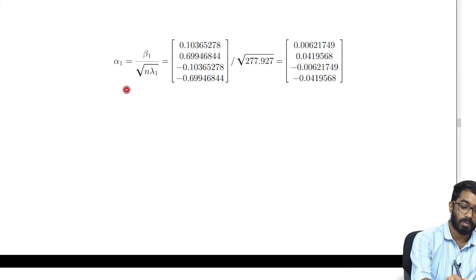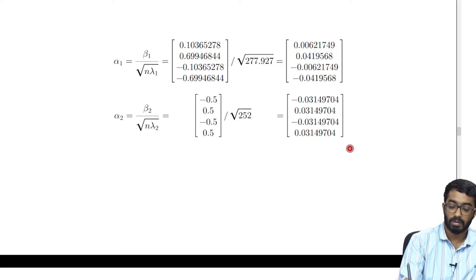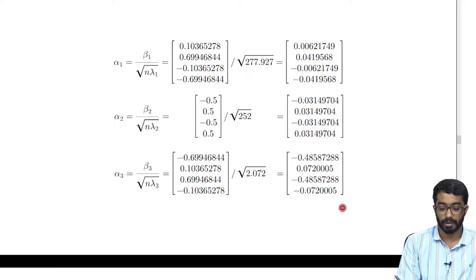Alpha_1 using the formula beta_1 divided by square root of n lambda_1, we get alpha_1 to be equal to this. Alpha_2 to be equal to this vector and alpha_3 is given by this vector.